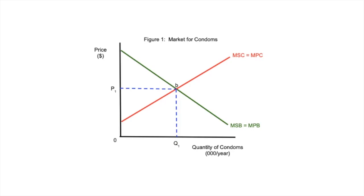Here we go. We're going to take a look at how to construct and draw the positive externalities of consumption diagram. What you always must do in economics is figure out where the story begins, and for all of the market failure diagrams, they all start with the same base diagram right here. Because we're doing positive externalities of consumption, this is going to be the market for condoms.